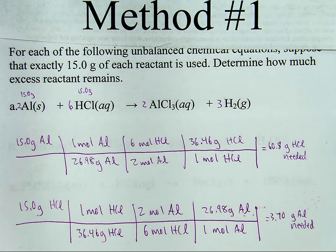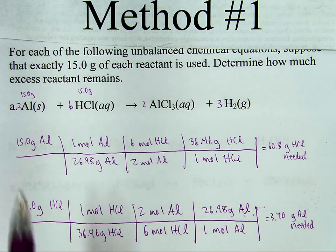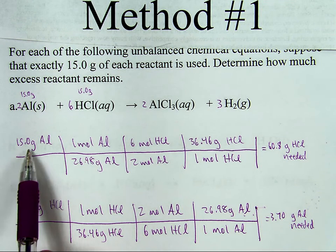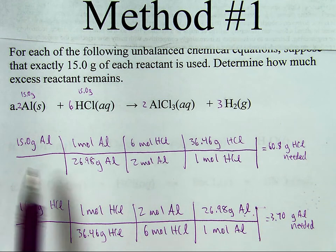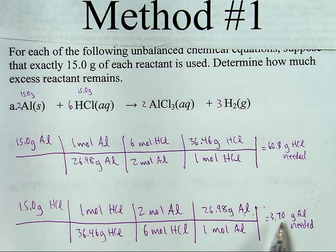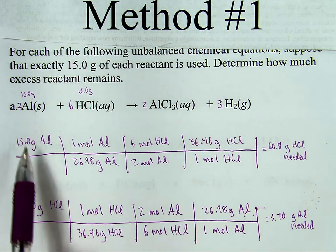Running the calculation: 15.0 grams of aluminum would need 60.8 grams of HCl to react completely. The other calculation comes out to 3.70 grams of aluminum needed. So you have 15 grams of aluminum and you only need to use 3.7 of them — since you have 15 and you're only using 3.7, you're going to have extra aluminum.